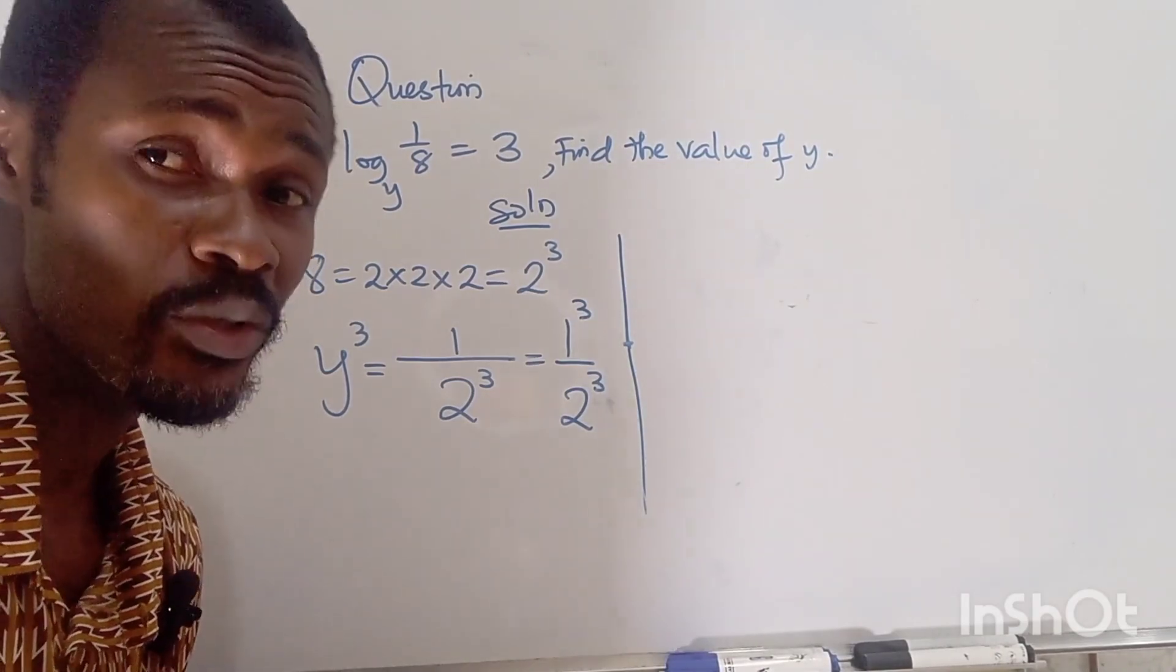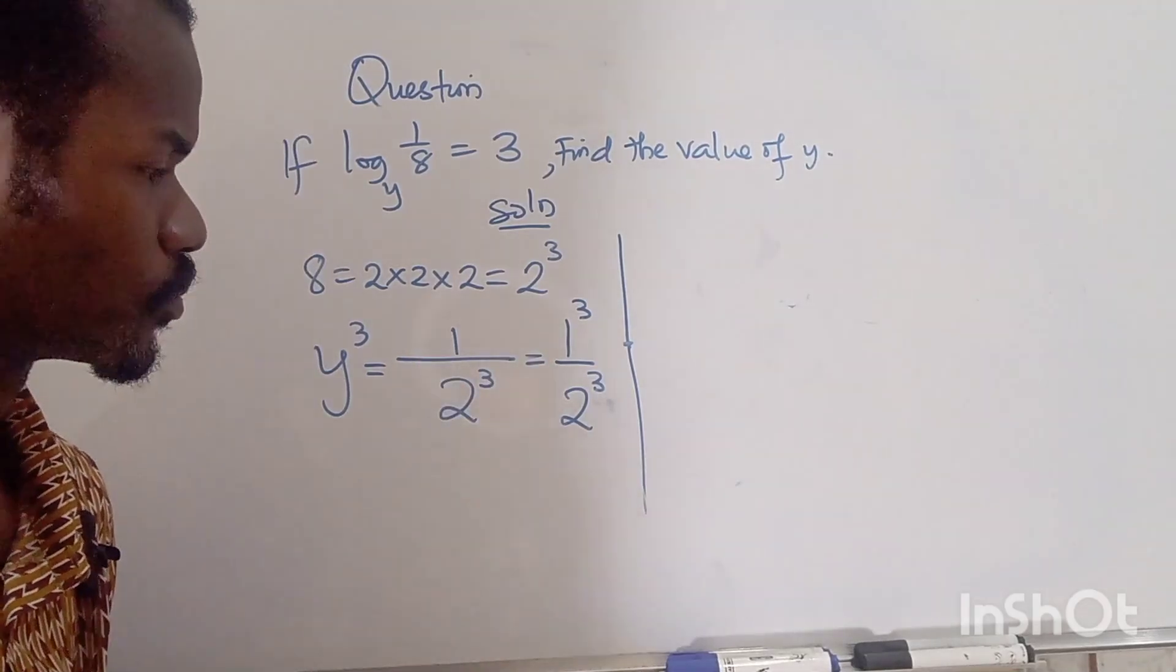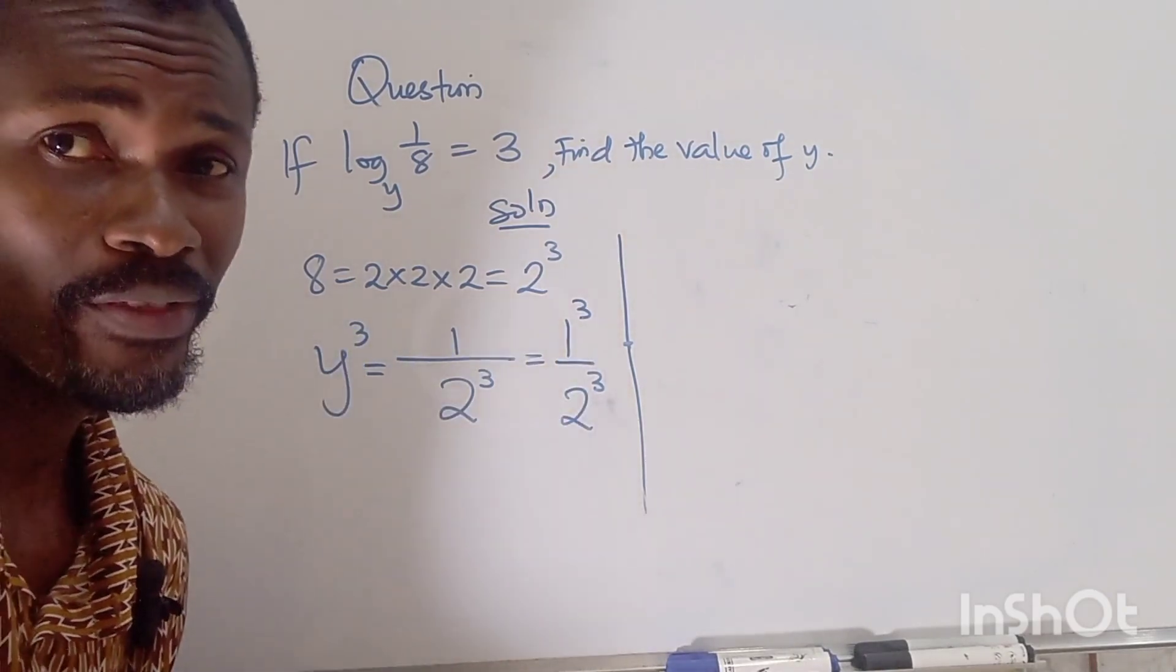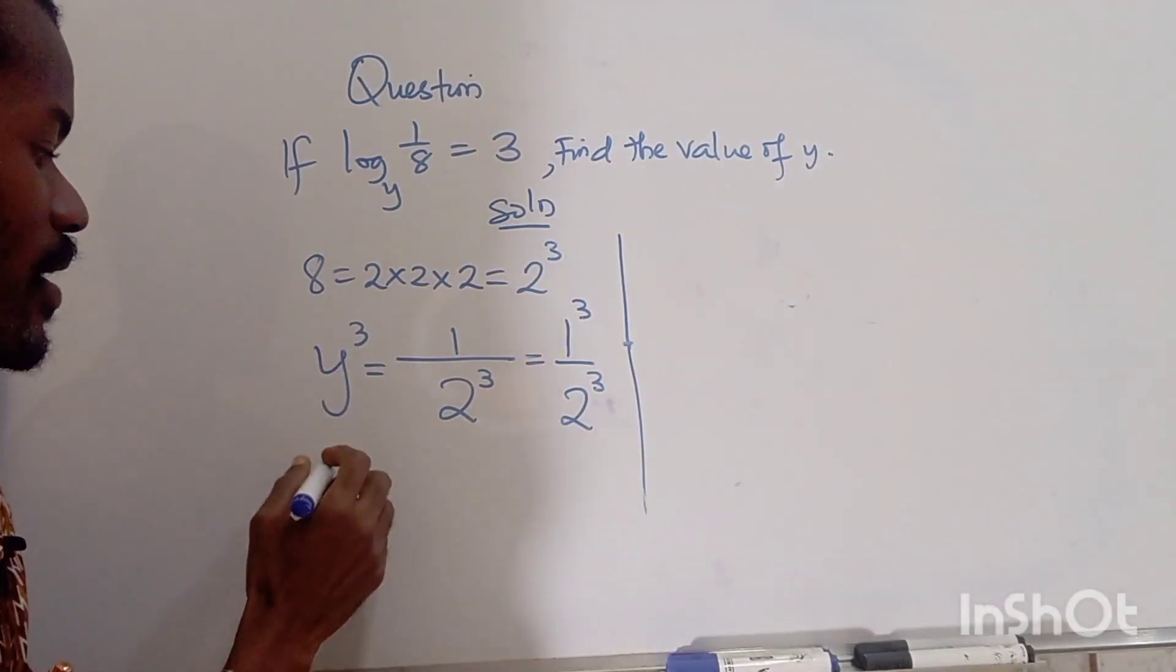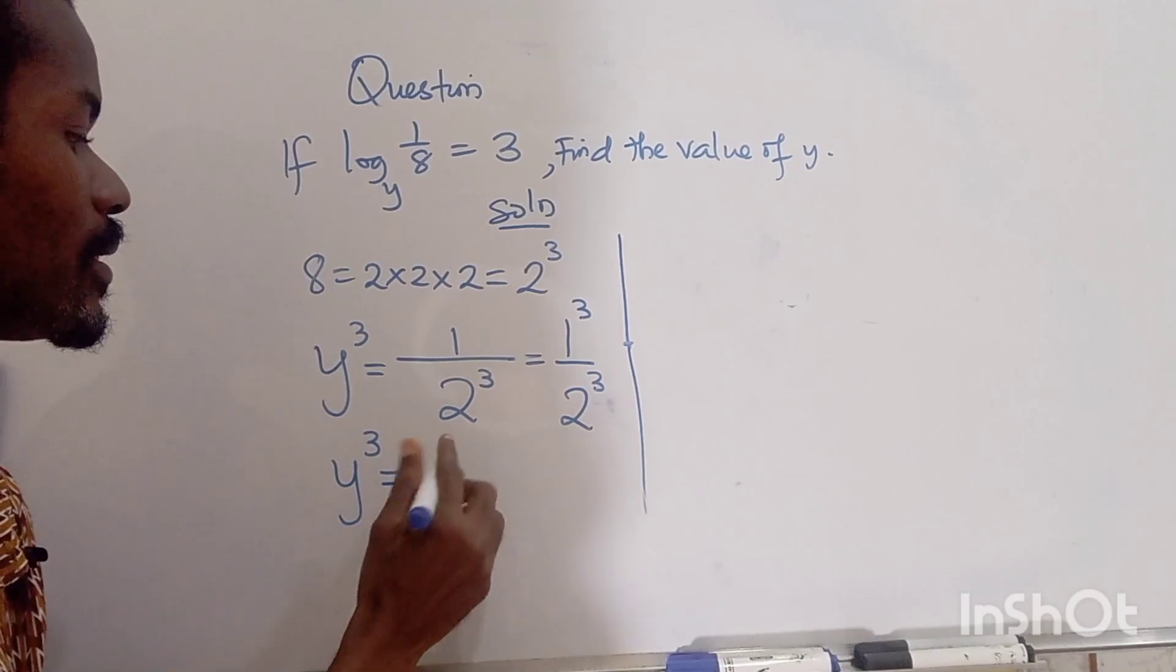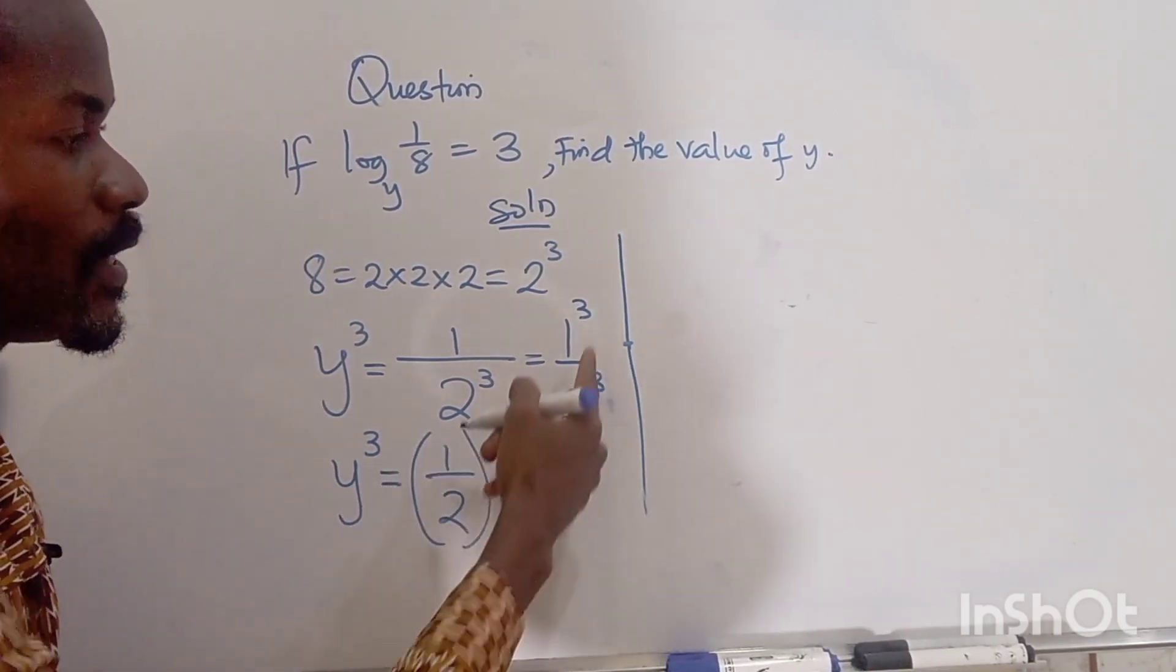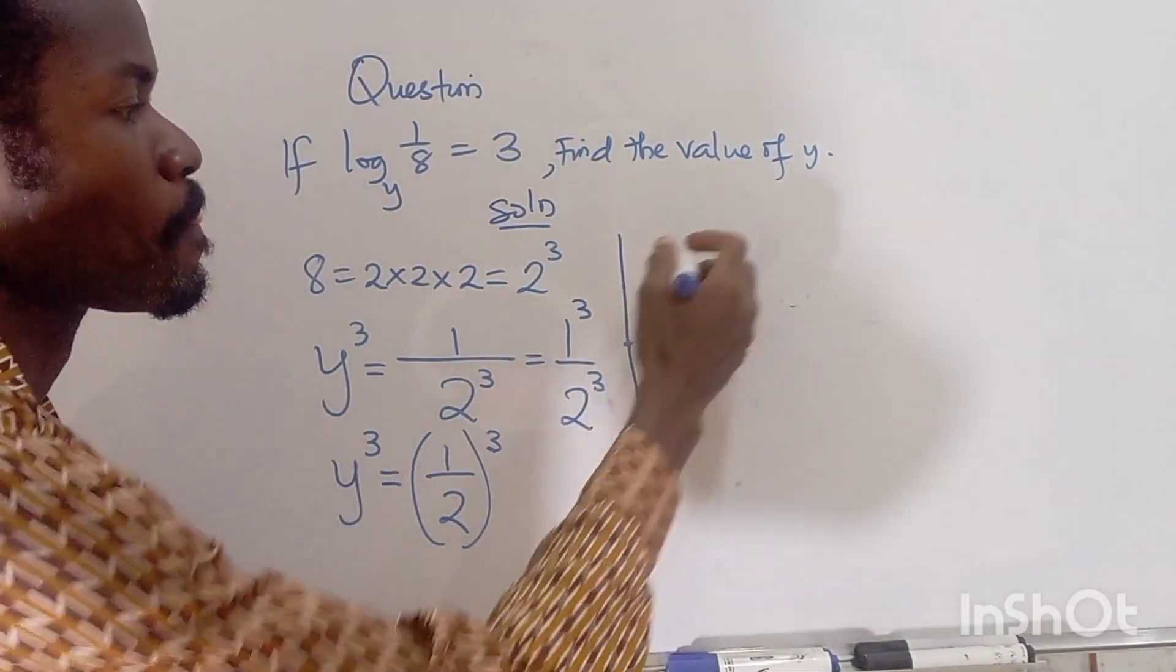Now why have I done this? Because I'm saying that we have the power of 3 applied on the left hand side. So we can write this as y raised to the power of 3 equals 1 over 2 to the power of 3. Since we have the same powers we can bring one power outside. Now we can compare.